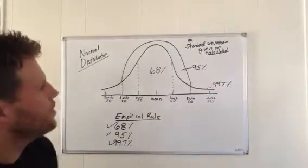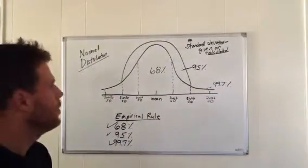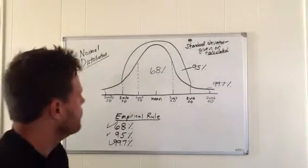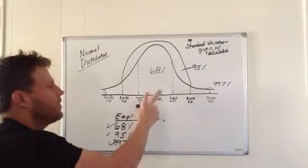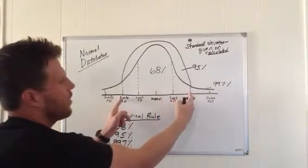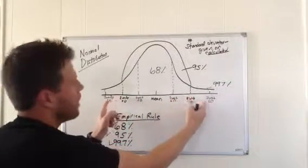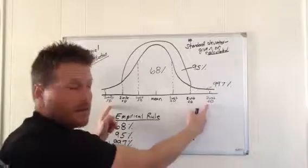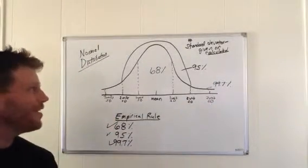Like I said, the standard deviation you can calculate or it's given to you. When we plot it on a normal distribution, we can see how the relevance comes to life. 68%, 95% two units, and 99.7% three units. That's the empirical rule in under three minutes.